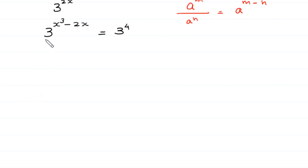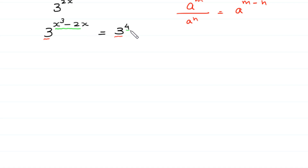Now, base is same at both sides — at the left side the base is 3, and at the right side the base is 3. So we can equate the exponents: x cubed minus 2x is equal to 4.